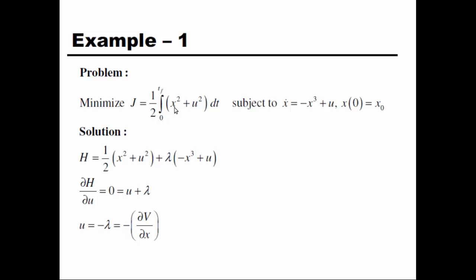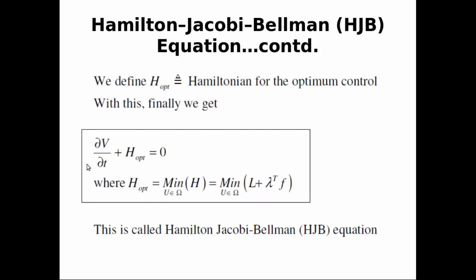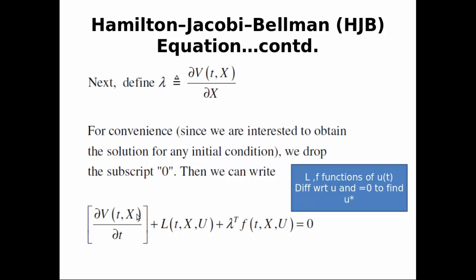For the example, the performance index is J = (1/2)∫₀^∞ (x² + u²) dt, subject to a scalar nonlinear plant ẋ = f(x, u, t), with a given initial condition. The Hamiltonian H equals the integrand L plus λ times the plant ẋ, set equal to zero.